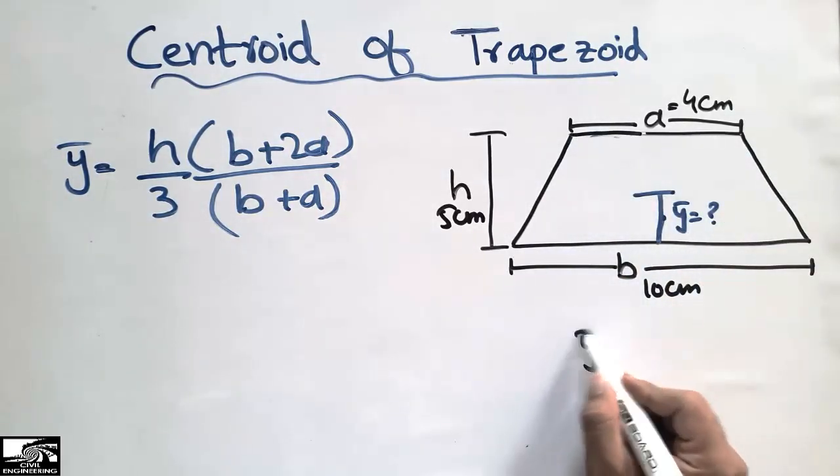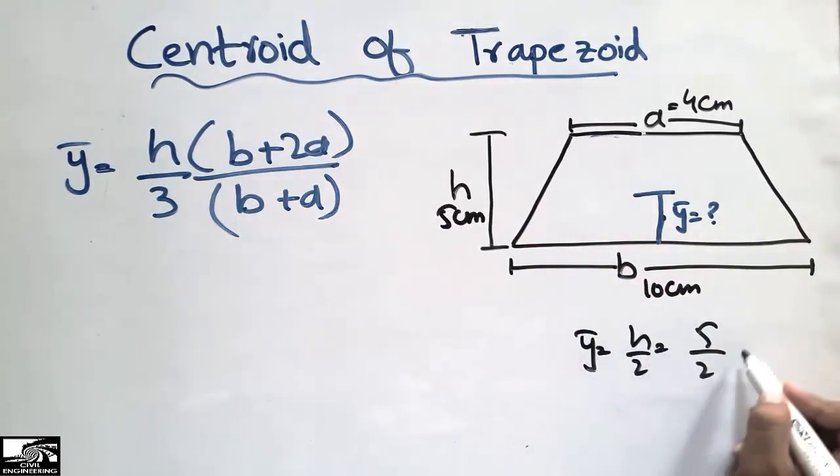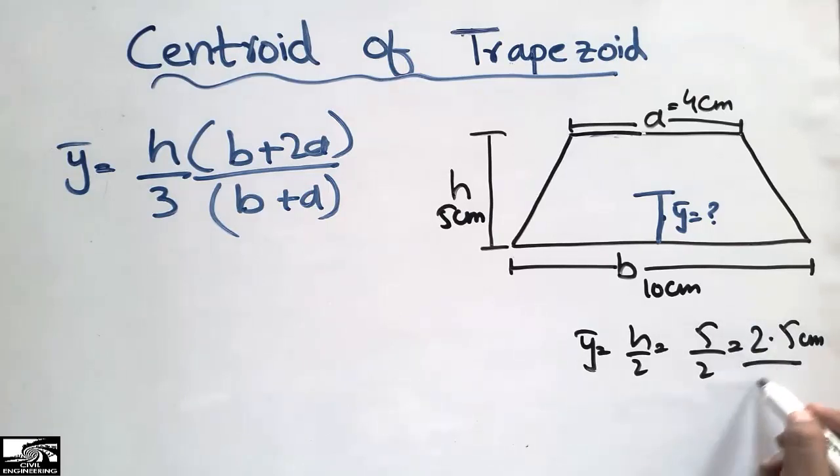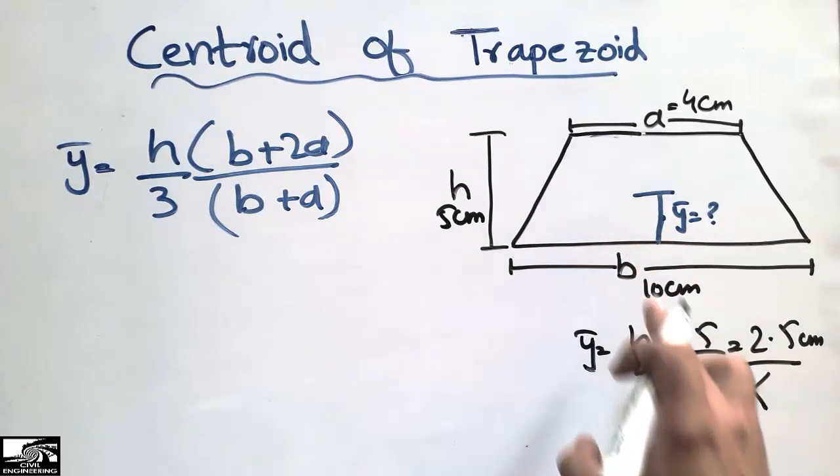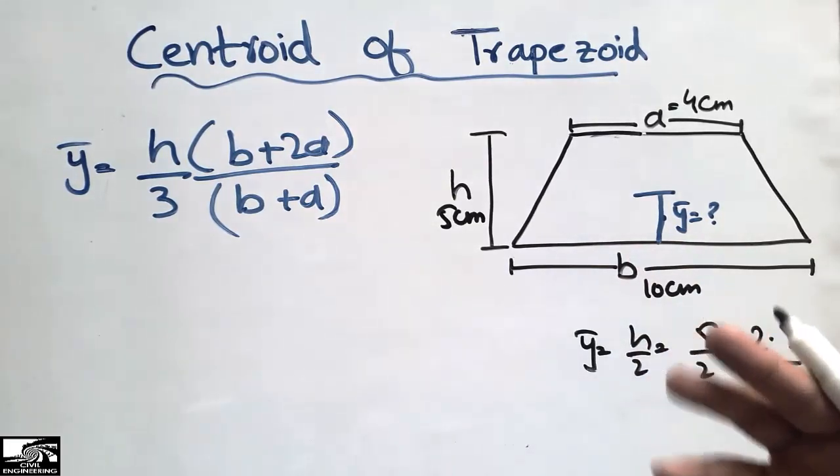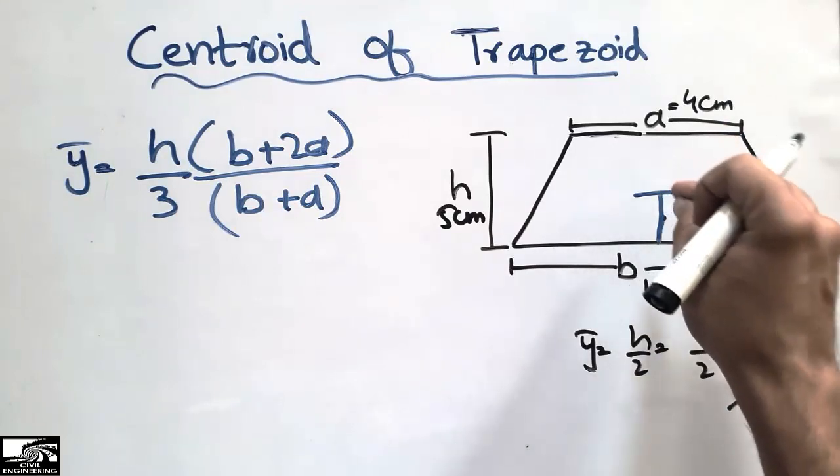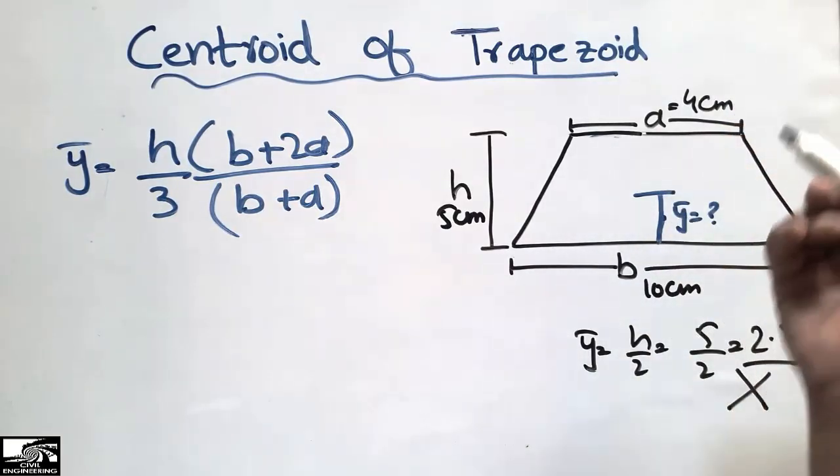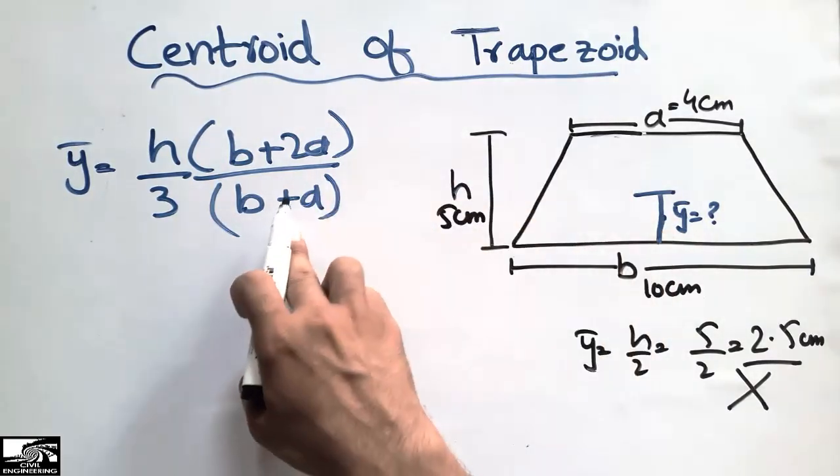The centroid is not just h by 2, which would be 5 by 2 equals 2.5 cm. No, this is the wrong way to find the centroid of this trapezoid. The centroid is defined as the point where the whole area acts at the center of the object.